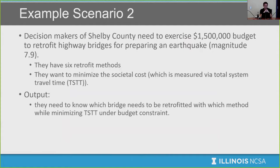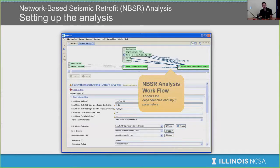The second scenario: a decision maker in Shelby County needs to use $1.5 million to retrofit highway bridges for earthquake preparedness. The question is: which bridges and what retrofit method should be used to use the budget efficiently? There are six retrofit methods for bridges. The benefit is measured by minimizing societal cost — specifically, minimizing the increase in total system travel time of traffic. Within Ergo, there is a network-based seismic retrofit analysis that uses a genetic algorithm for optimization.